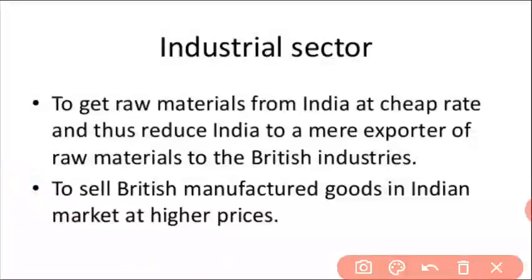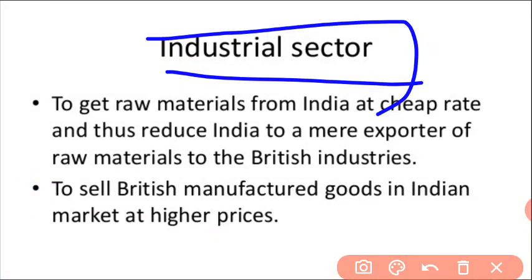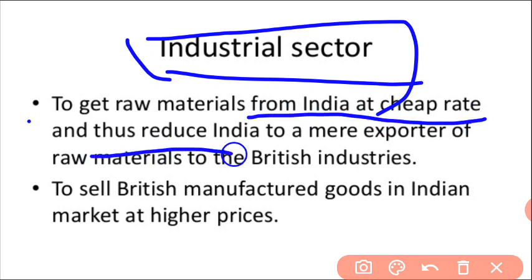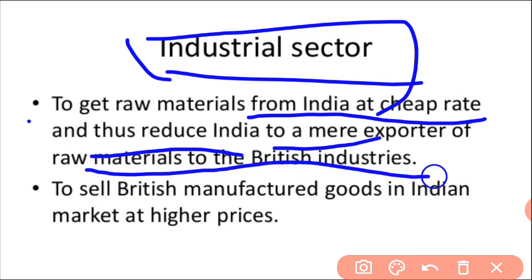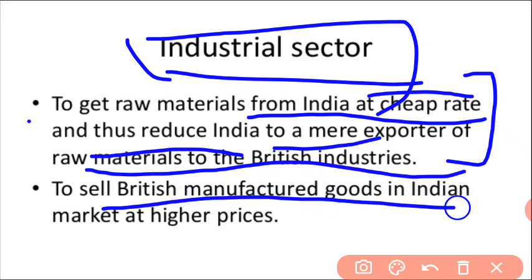The British colonial policy was to get raw material from India at cheap rates, thus reducing India to a mere exporter of raw material to British industry. Raw material was bought at a very low rate, and then manufactured goods were sold back in the Indian market at higher prices.